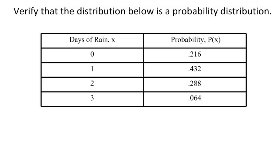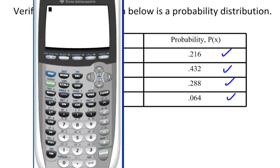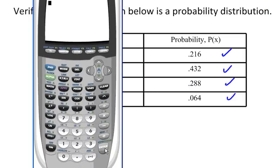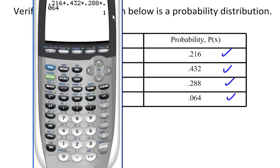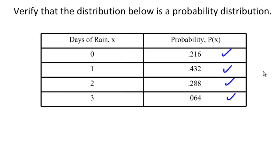Let's verify that this distribution is a probability distribution. First, let's check: 0.216 — yes, that's between 0 and 1; 0.432 — between 0 and 1; 0.288 and 0.064 — all of those are between 0 and 1. Now the second condition: when I add all of these up, is it equal to 1? So 0.216 plus 0.432 plus 0.288 plus 0.064 — I add those together and I get 1. The sum of those four equals 1, so yes, this distribution is a probability distribution.